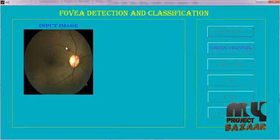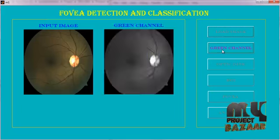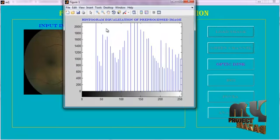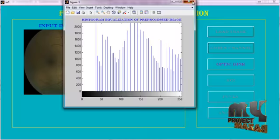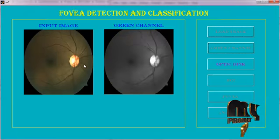It is the given input image. Then we go to the green channel process. It is the histogram equalization of prepared image. It is useful to find the fovea center and optic center. And it is the green channel of the original input image.